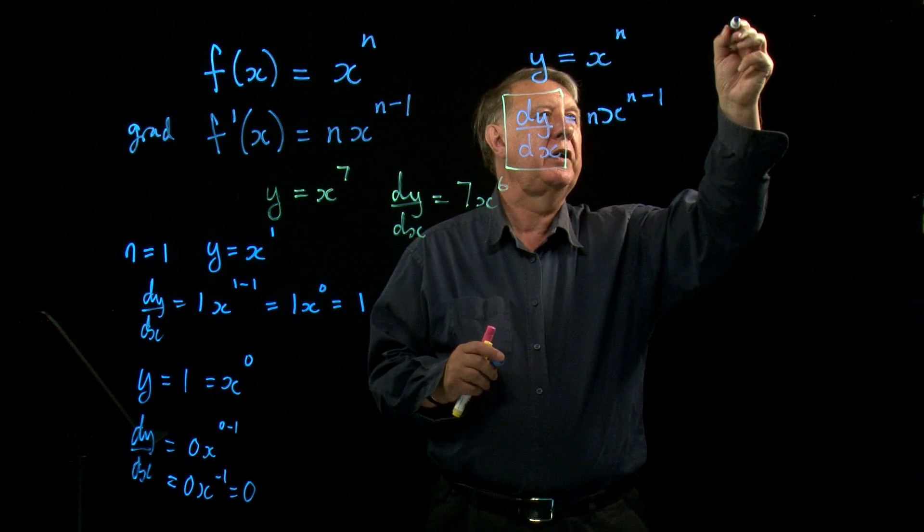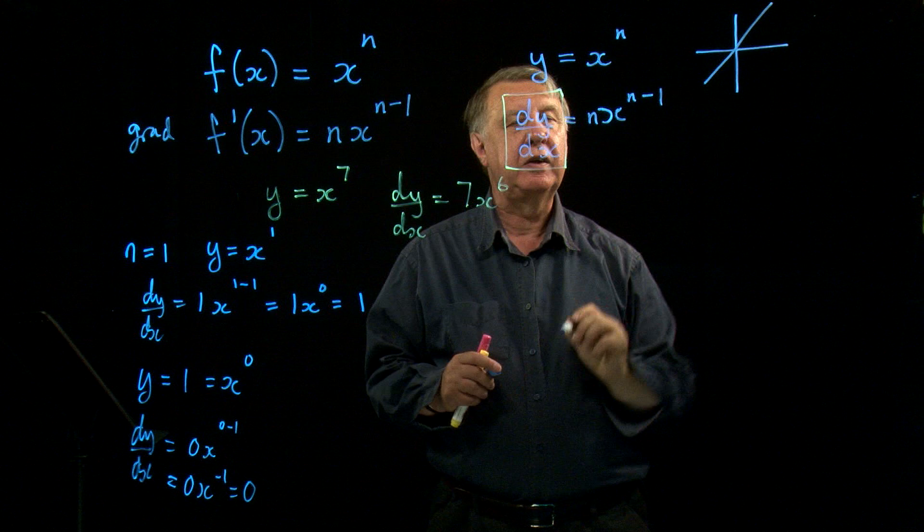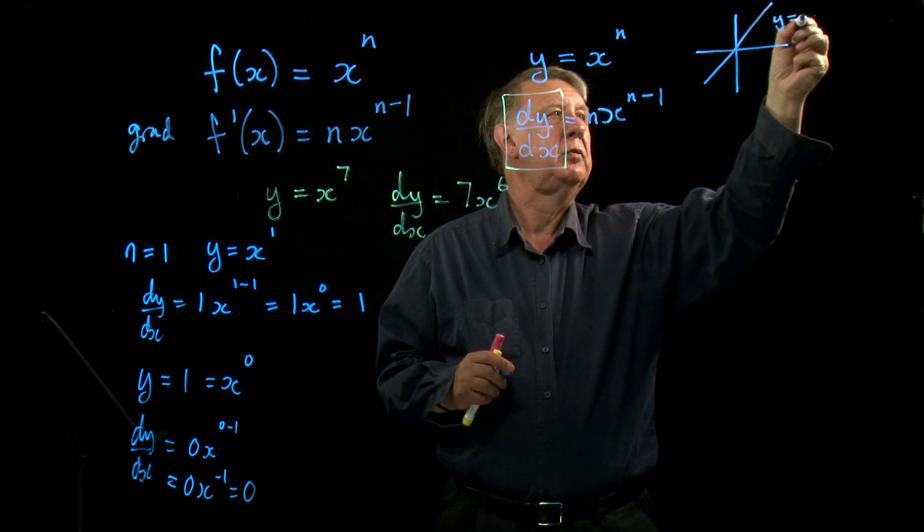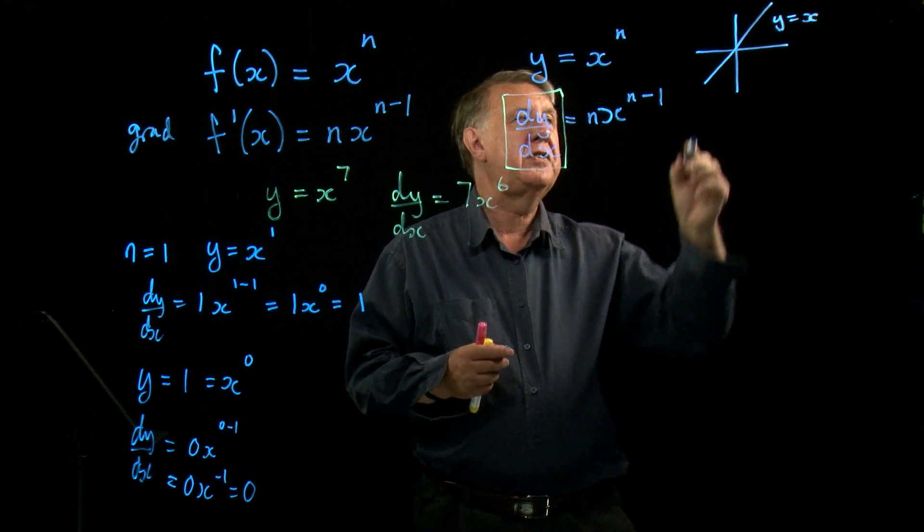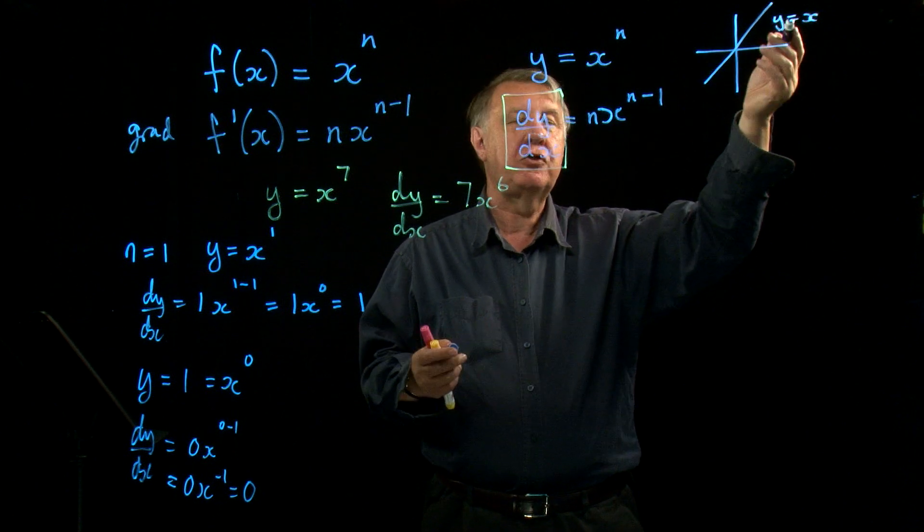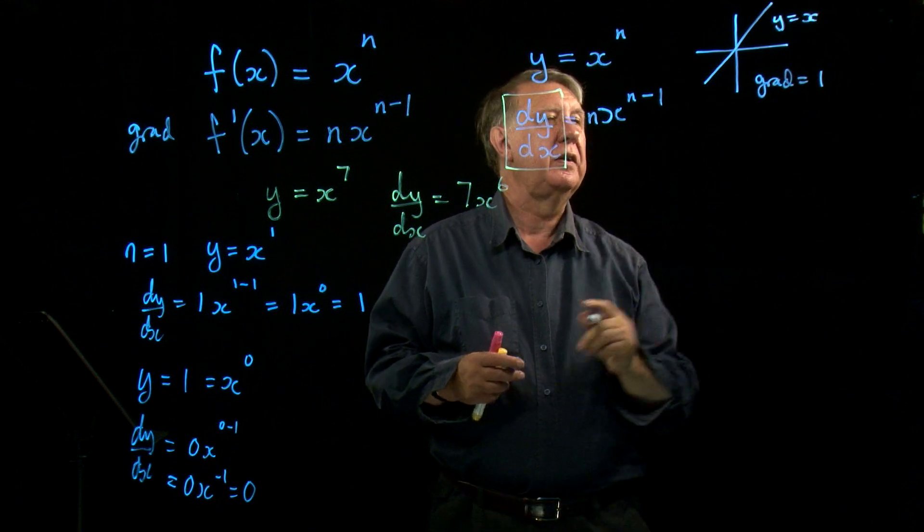So that's actually no surprise at all, because what am I actually saying here? Well, the graph of y equals x is of course a straight line like that. What is the gradient of that line? It's always 1. It's not a curved line, it doesn't change, so it's not surprising that the gradient is 1.